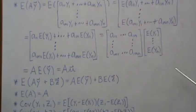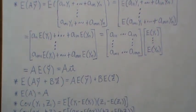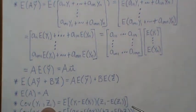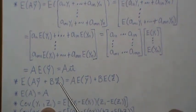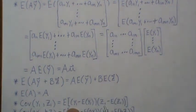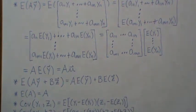Now let's look at some scalar properties of covariance — these are not vectors or matrices. So y1 is the first component of the y vector, and z1 is the first component of z — these are scalars. The covariance by definition is the expected value of (y1 minus its mean) times (z1 minus its mean).